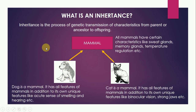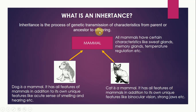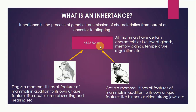Now what is inheritance? If we see biologically, inheritance is the process of genetic transmission of characteristics from parent or ancestor to offspring. Now the animal kingdom is divided into various classes. You might have already studied this in biology. Mammals is one of the classes of the animal kingdom. All mammals have certain characteristics like sweat glands, mammary glands, temperature regulation, etc.